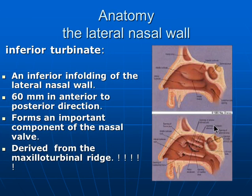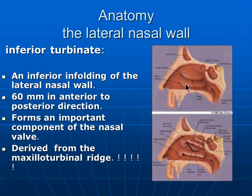The lateral nasal wall is very important, and the function of the nose depends on this lateral wall because it contains ridges called the turbinates. The largest one is the inferior turbinate. It is an infolding of the lateral nasal wall with bone in the center surrounded by erectile tissue. It measures about 60 mm from anterior to posterior and is an important component of the nasal valve.